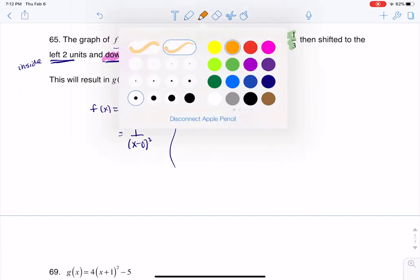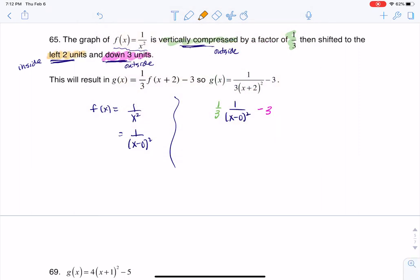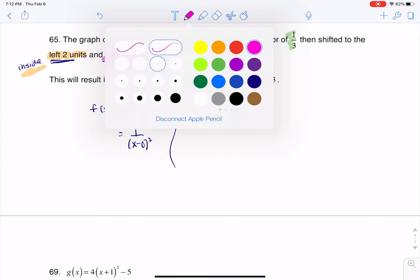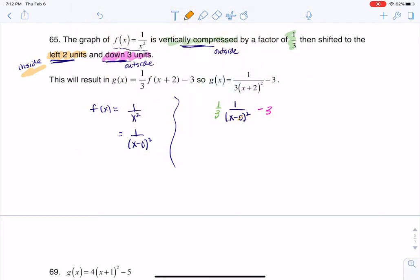The last thing I was asked to do was move left two units, but that's going to happen inside of my grouping symbols. So instead of having a zero here, I'm going to have a minus two. But if you think about x minus a negative two and I simplify that a little bit, whoops, let me erase this for a moment. I'm going to have this become x plus two.